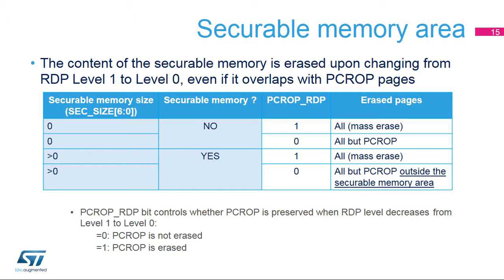Note that the code present in the securable memory can also be protected against read and write accesses by mapping it into PCROP areas. Changing the RDP level from Level 1 to Level 0 will erase these PCROP areas. Whatever the value of the PCROP RDP bit, only the contents of PCROP areas outside the securable memory address range will be preserved.